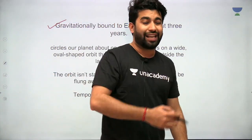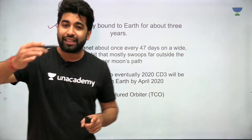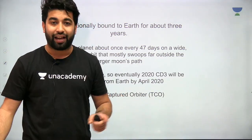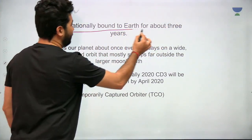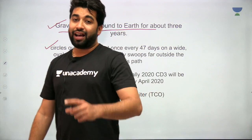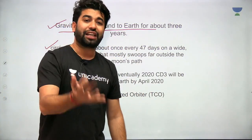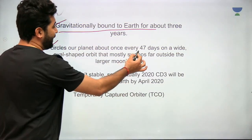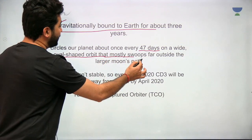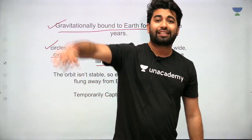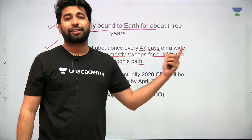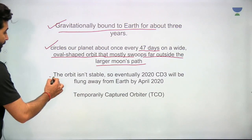One very interesting fact: it has been gravitationally bound to Earth for about three years. Three years ago, if we had studied its trajectory, we could have predicted that it would form an orbit around Earth. 'Bound' doesn't mean it physically arrived 3 years ago — it means it was already fixed within Earth's gravitational field 3 years ago, with its trajectory decided. It revolves around Earth about once every 47 days on a wide oval-shaped orbit that mostly stays far outside the larger Moon's path.